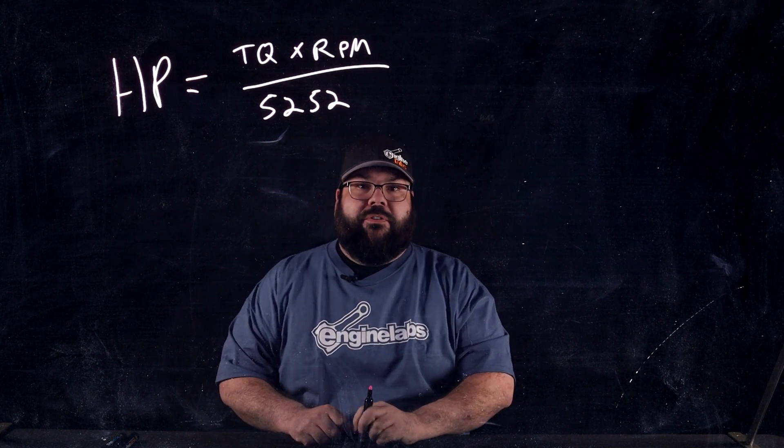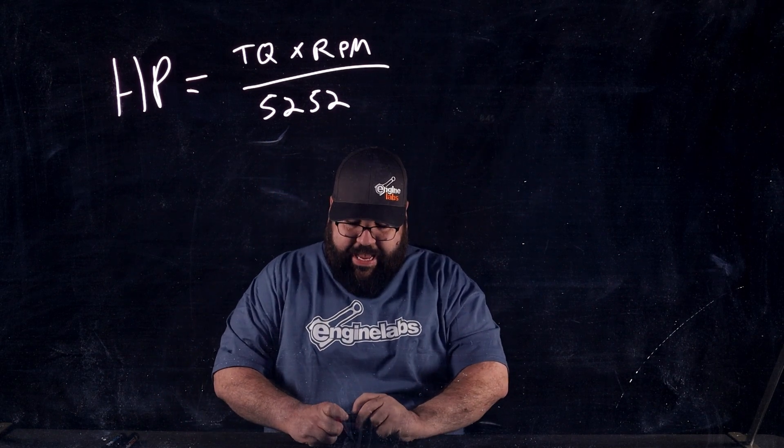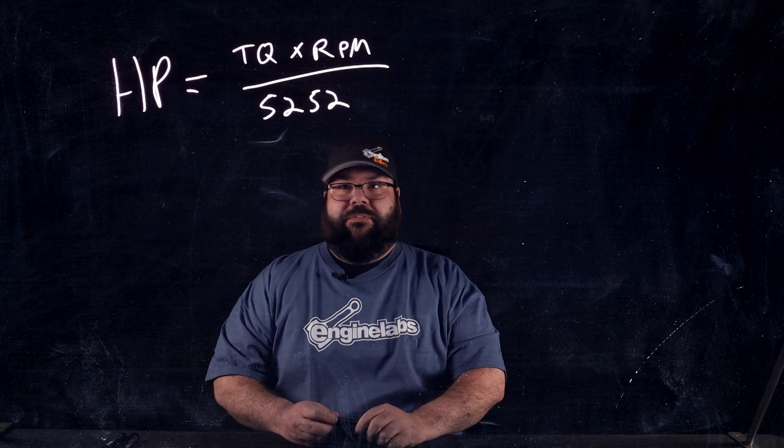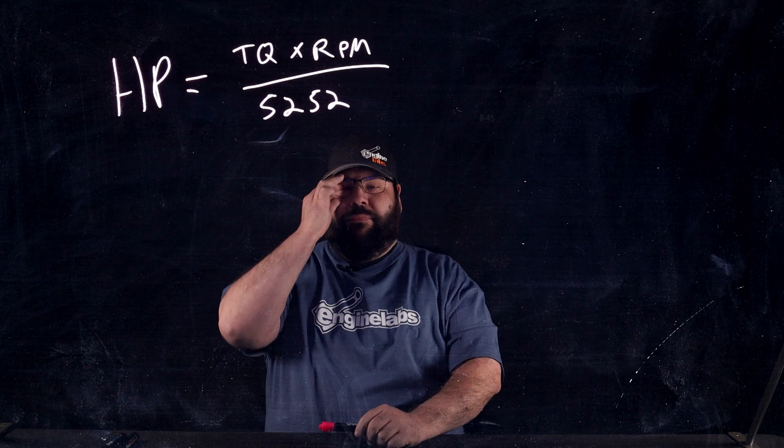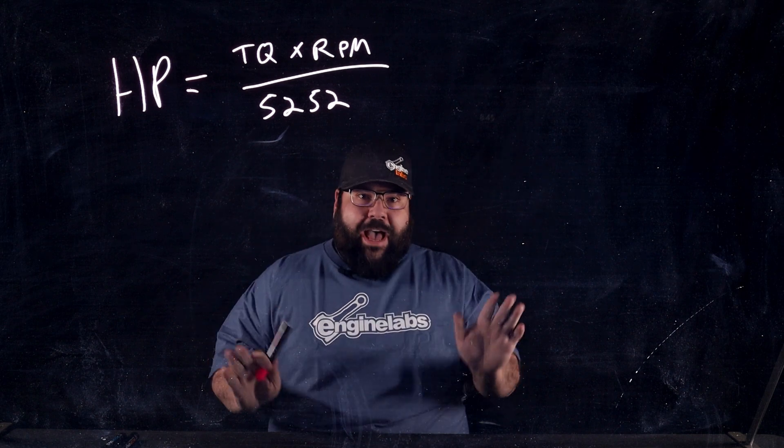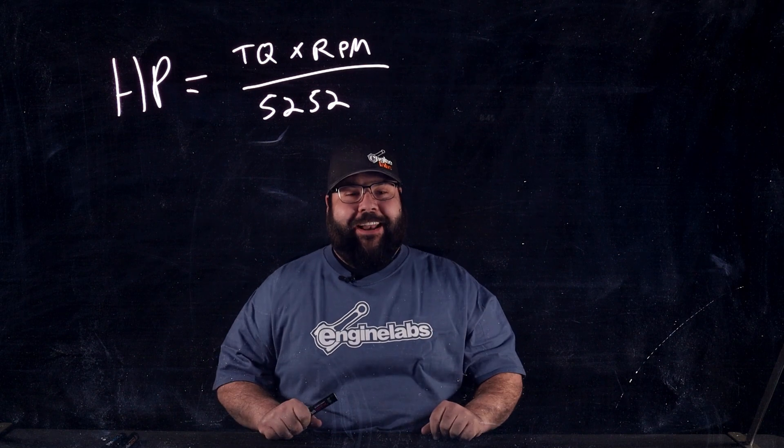Now, that number might look familiar because every dyno graph you have ever seen in your life crosses at 5252 RPM. Why? Well, if you're a math person, you've already figured it out.